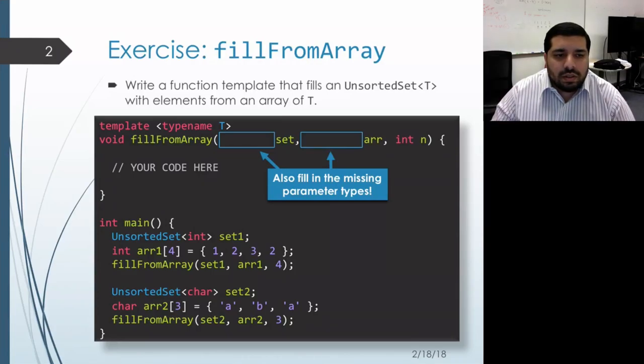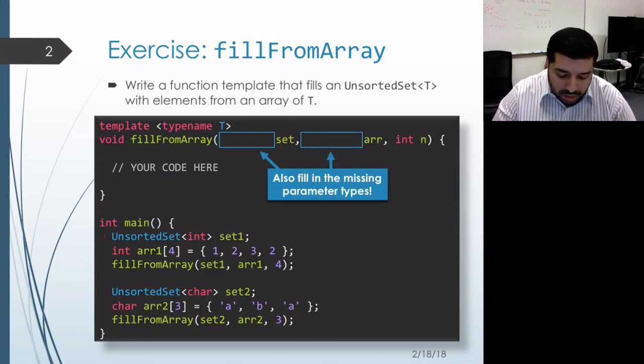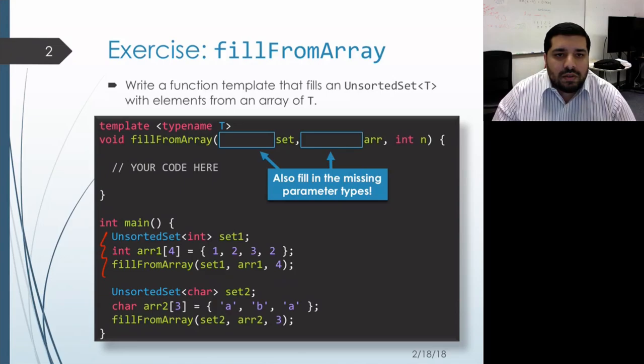Let's write a function template that will take a set object, an array, and a number of elements and copy those elements over from the array into the set. This is going to be a function template - it'll allow us to do this for any element type. If we look at main, we see that the first example is using the element type of int, so the set object is actually going to be an unsorted set of int, and the array is actually going to be an array of ints.